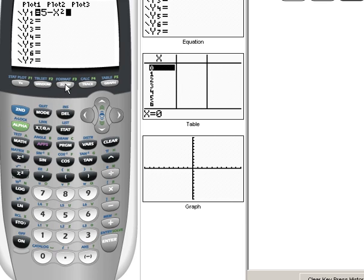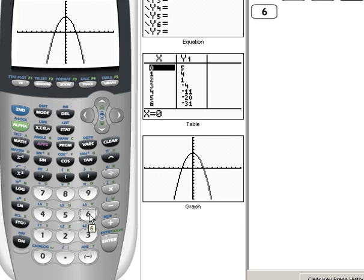Now let's graph it. So we'll hit zoom 6 to get a normal standard window and this is what our graph looks like.